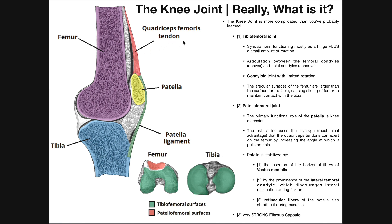A tendon by definition connects a muscle to a bone. The patella would be the bone part, and then up here we have the quadriceps muscles — quadriceps femoris — so this upper part is a tendon. It's usually called the quadriceps tendon. You can call it the patellar tendon, but make sure you differentiate it from the patellar ligament. They are one continuous structure, but we divide them into two regions based on the definitions of tendon and ligament.